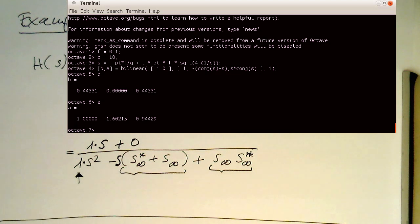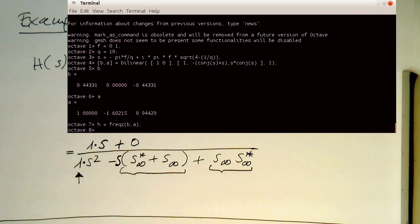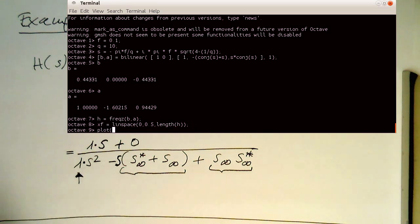And for this we are using again our handy command freqz, which just needs to get these two coefficients here. So the FR coefficients and A are the recursive ones. And then we are creating our frequency vector here, 0 to 0.5. And with that then we can plot the frequency response of our filter.